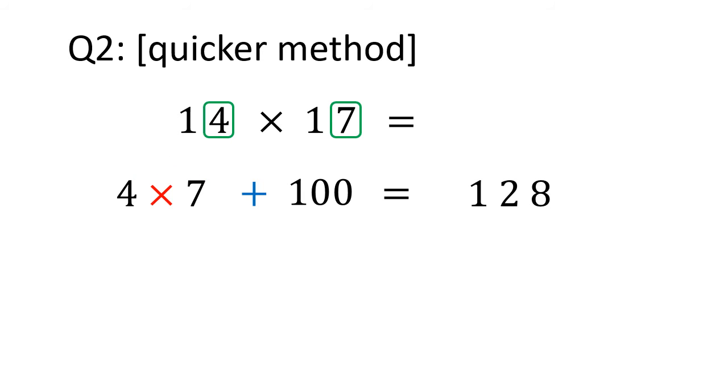Now we need to find the sum of ones digits, 4 plus 7, which is 11. Then multiply by 10, which makes 110.